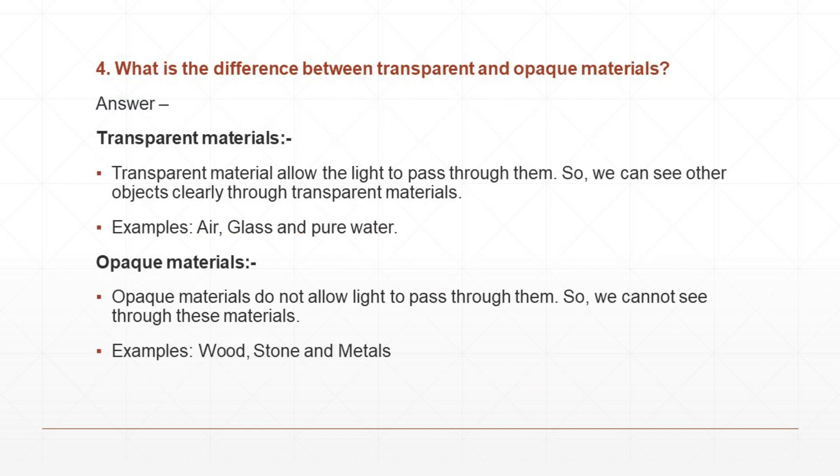Question number 4. What is the difference between transparent and opaque materials? Answer: transparent materials allow the light to pass through them, so we can see other objects clearly through transparent objects. Examples: air, glass, and pure water. Opaque materials do not allow light to pass through them, so we cannot see through these objects. Examples: wood, stone, and metals.